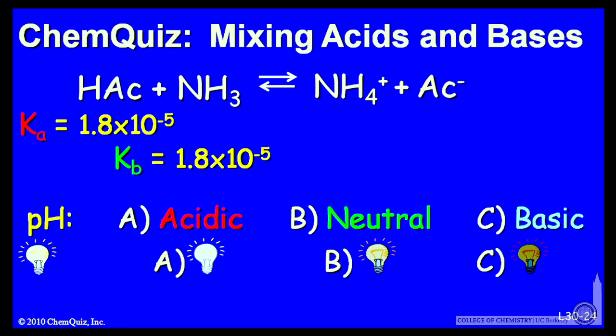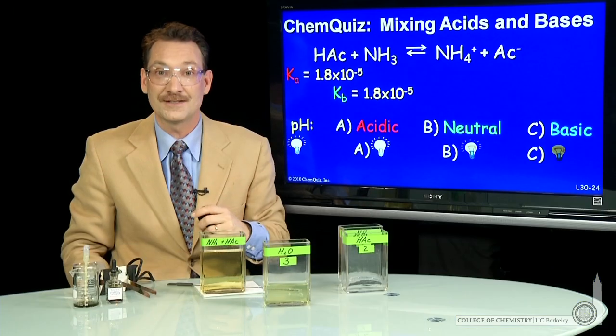The base ammonia NH3 has a base strength that's about the same. So in fact, they're very close. So having an equal strength weak acid and weak base gives you about a neutral solution when you mix them.